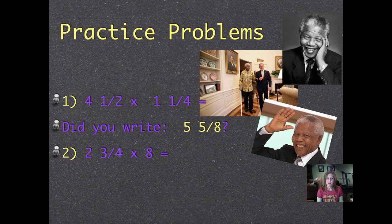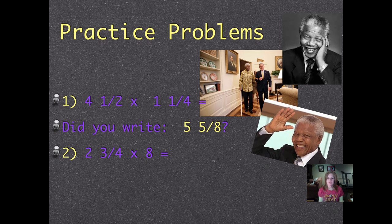Number two: 2¾ × 8. Don't let it freak you out that that's a whole number. We know how to write a whole number as a fraction so we can multiply it easily. Pause it and push play when you've figured it out.